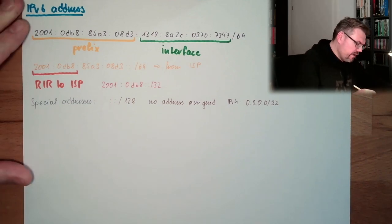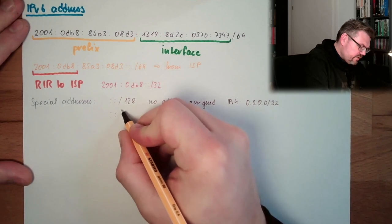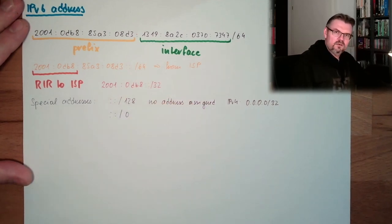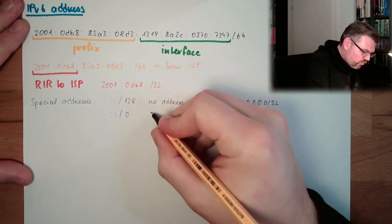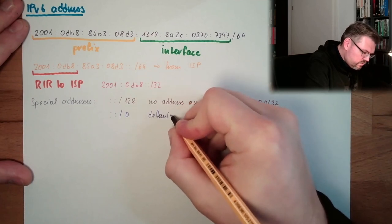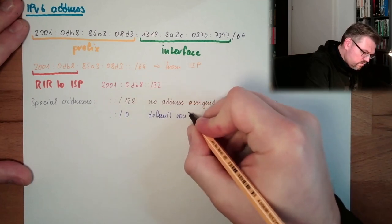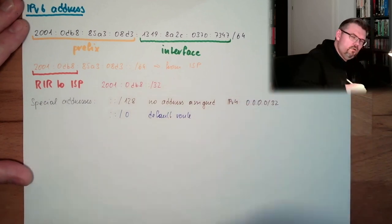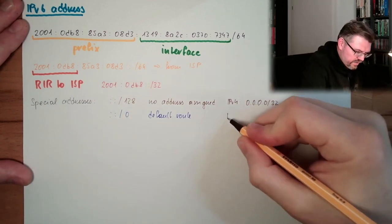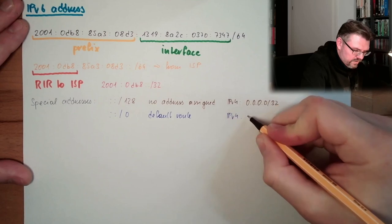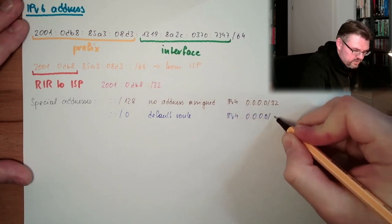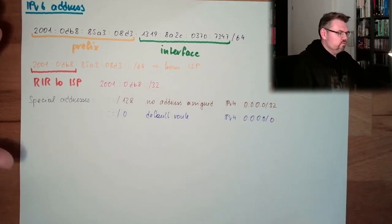As a destination address we have ::/0, which is the default route. In IP version 4, this would be 0.0.0.0/0 — the default route.